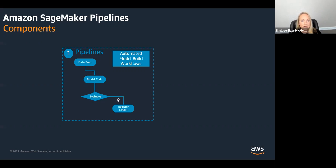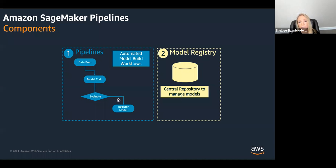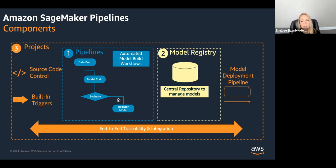This brings us to our next component. Once you register a model, the second component is Model Registry. What that does is allow you to track that model lineage we talked about — how was that model built, how did it perform, where is it deployed to? One unique aspect of SageMaker's implementation of model registry is it does have a built-in approval workflow, to allow you to either approve or reject the model for downstream deployment. This is used in conjunction with the third component — that automated workflow capability called Projects.